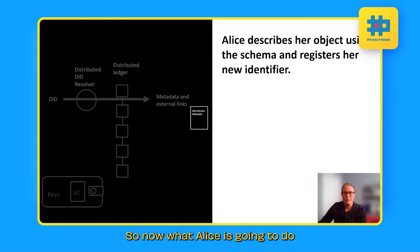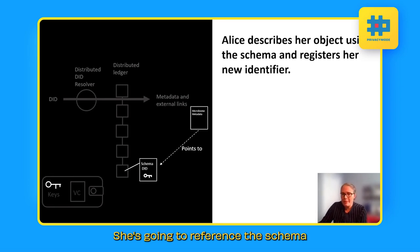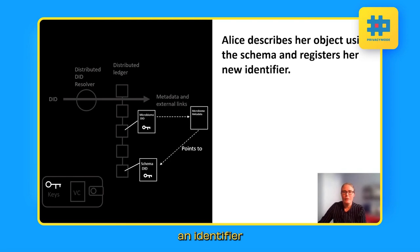So now what Alice is going to do is she's going to write metadata for descriptive metadata for her sample that she wants to give an identifier to. She composes that metadata according to the schema that she had found. She's going to reference the schema that she's using in order to write that metadata. And then she is going to create an identifier for the metadata record that she has just written. And she's going to sign that identifier with her private key so that anyone can look up and confirm that, yes, it was indeed Alice who authored that microbiome sample. And she was the one who registered the decentralized identifier.